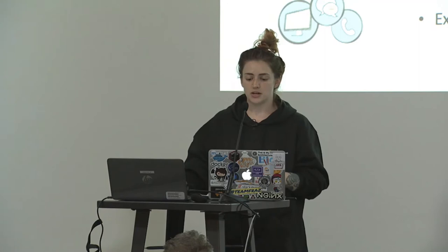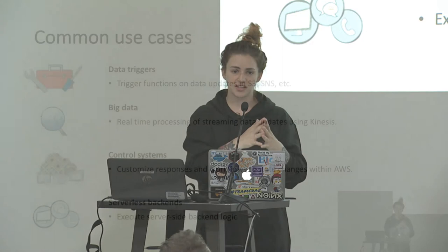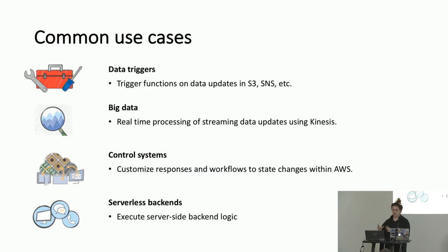Big data: you can have your streaming data updates through Kinesis. Control systems — same idea: something changed in part A, so I need to make an update or change in part B. Customize your responses and workflows to state changes within AWS itself.